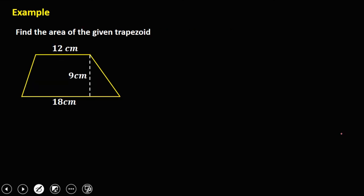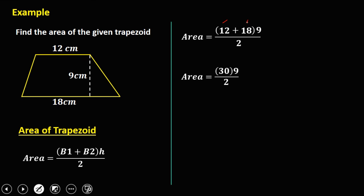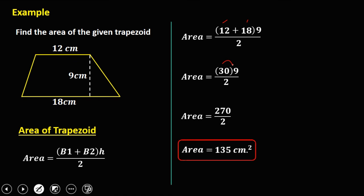Find the area of the given trapezoid. Using the formula: (base one + base two) times height, divided by 2. Base one is 12, base two is 18, and the height is 9. So: (12 + 18) × 9 / 2 = 30 × 9 / 2 = 270 / 2. The area of this trapezoid is 135 centimeters squared.